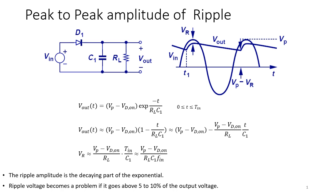Let's try to calculate how much ripple we have. This is the circuit that I was discussing, and this was the behavior that we saw for the circuit — the Vout of the circuit versus Vin. If I want to write the expression for Vout only from this point at the peak, where the discharge starts all the way to this point, we call this T3 and this point T_peak.